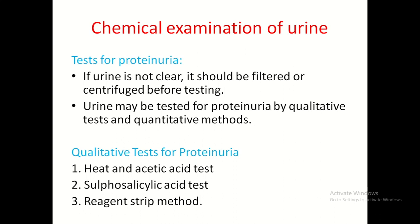After physical examination, coming to chemical examination of urine. Test for proteinuria — detection of presence of protein in urine. If urine is turbid, it should be filtered or centrifuged before testing. Urine may be tested for proteinuria by qualitative methods — whether protein is present or absent — as well as quantitative methods to measure exact amount, or semi-quantitative methods.